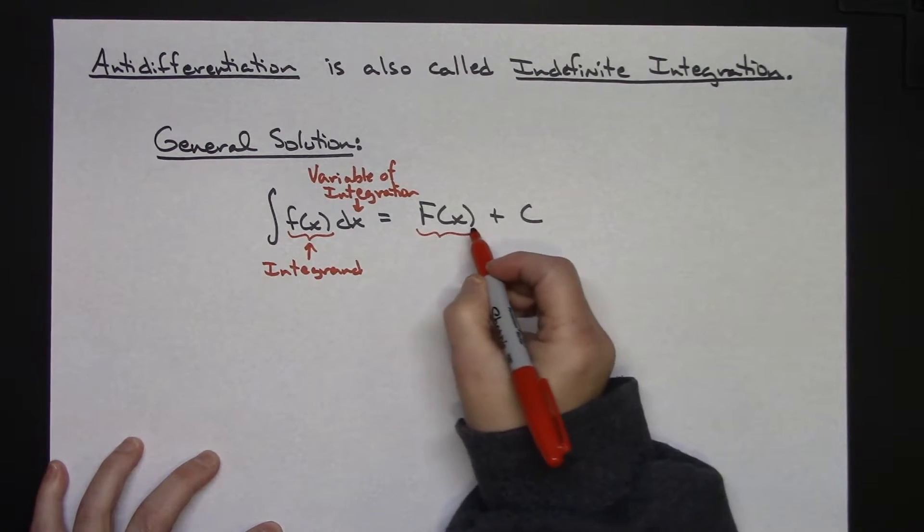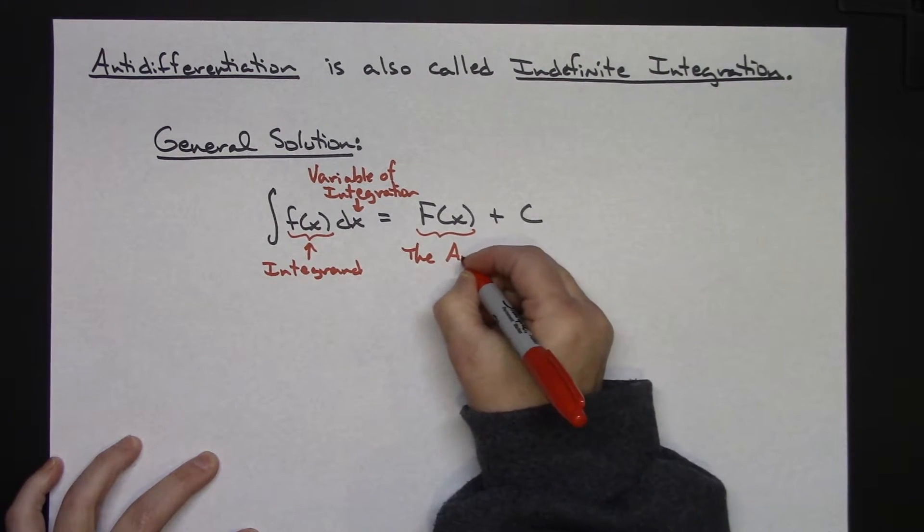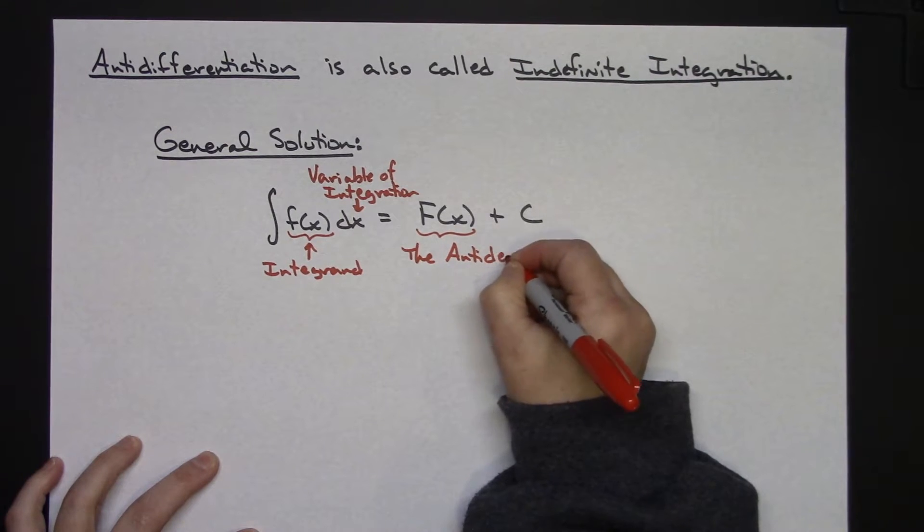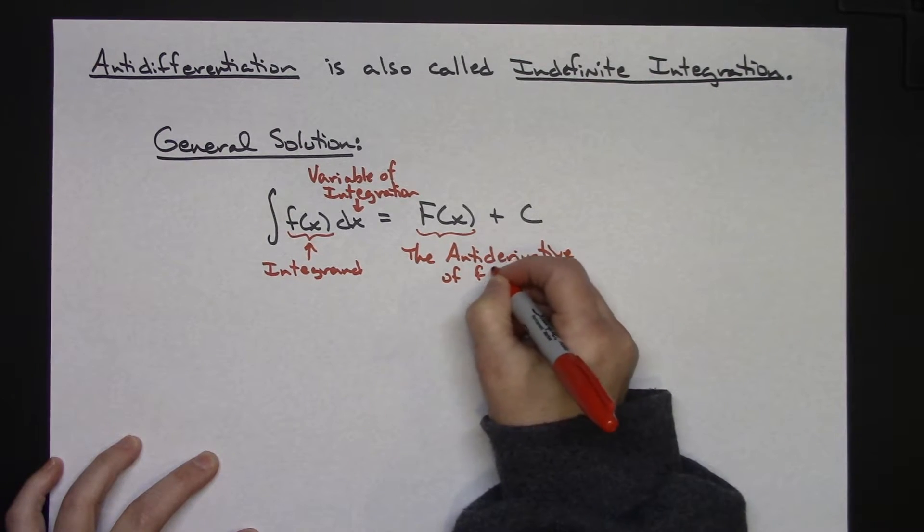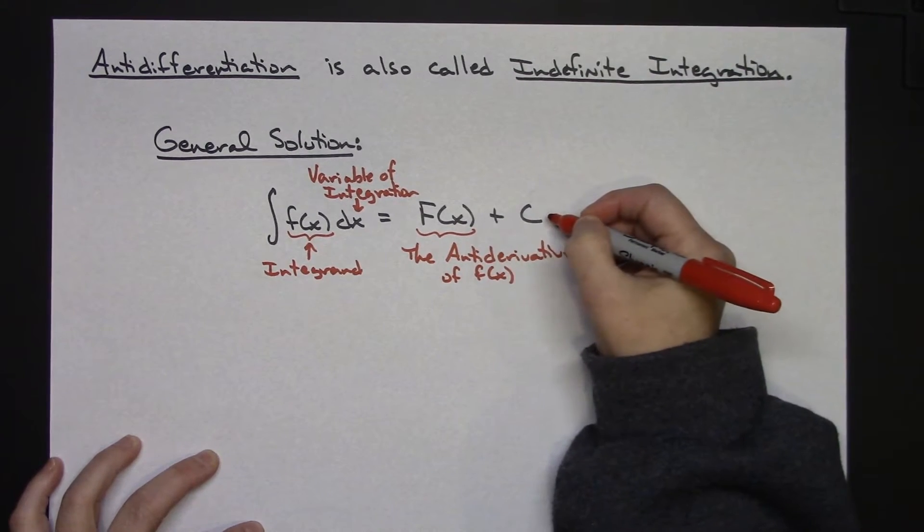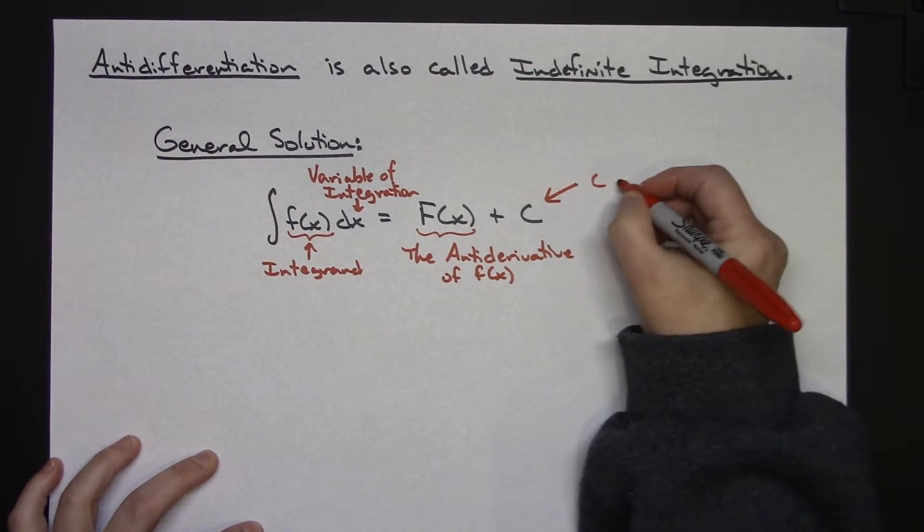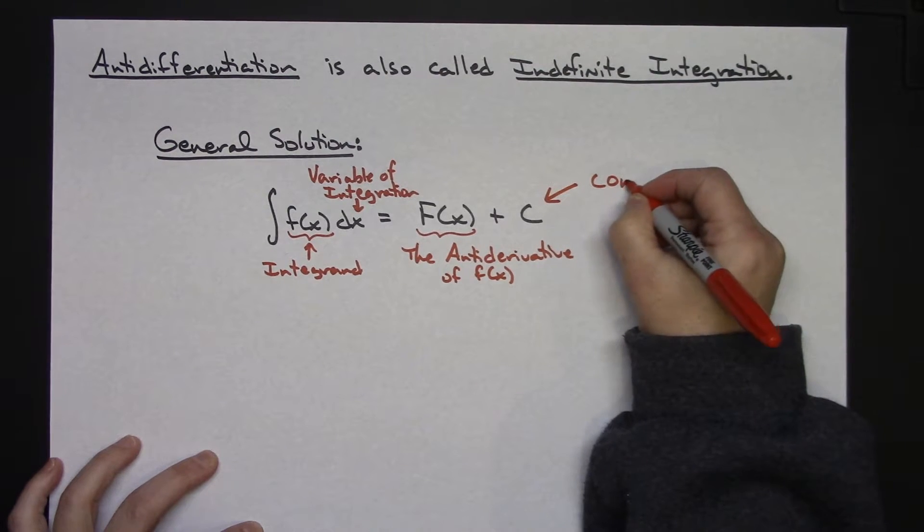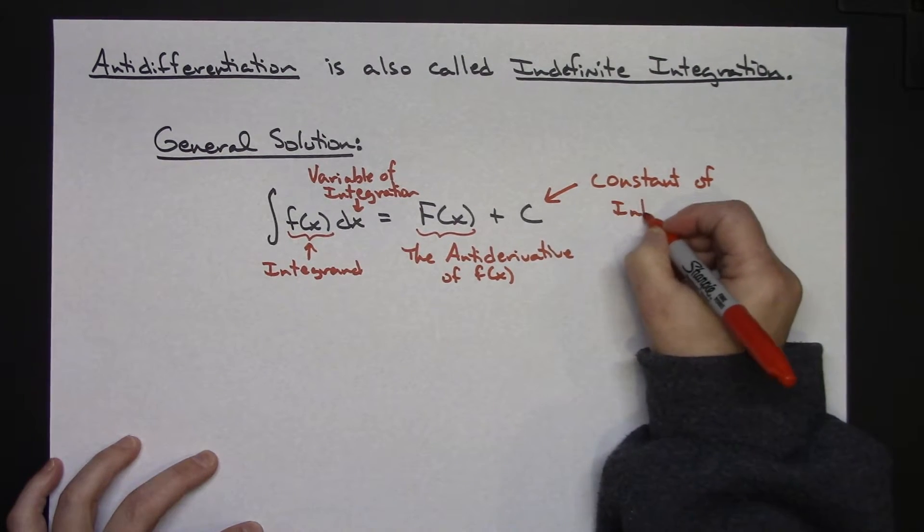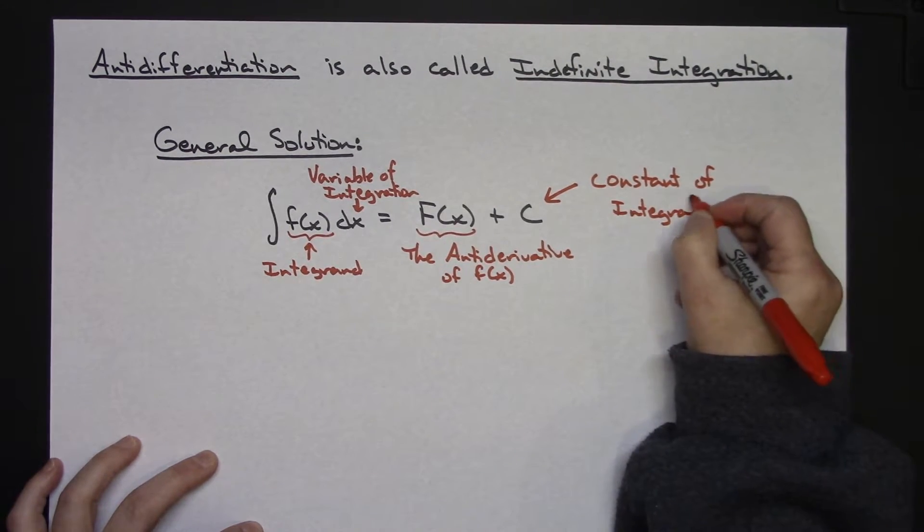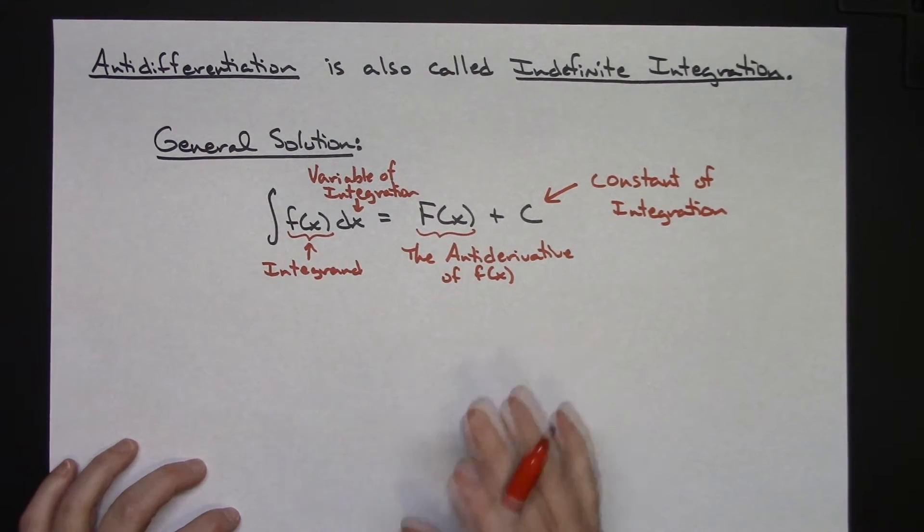This right here is going to be the antiderivative of f of x. And then this plus c out here is our constant of integration, and it gives us our general solution. So it's a constant of integration. Being able to read it and understand what's going on here is going to kind of really be important.